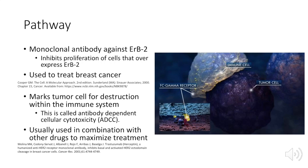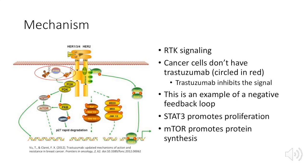The mechanism shown to the left is that of a regular cell. As we can see, these are two dimerized receptors and it's an example of RTK signaling. So when a ligand binds to both of the receptors, they dimerize and phosphorylate one another's tyrosine. This in turn phosphorylates STAT3 and mTOR, which are the two proteins that we should focus on for this pathway.